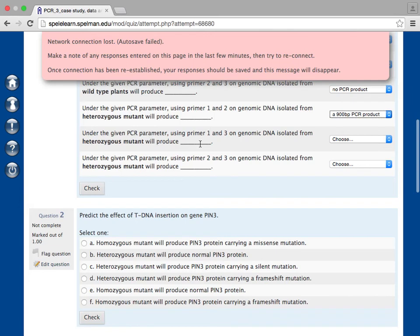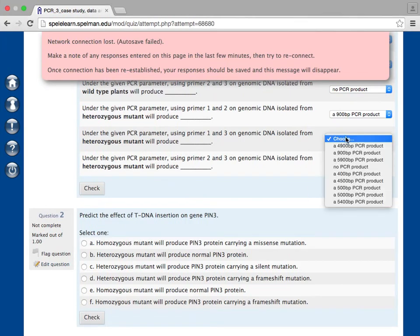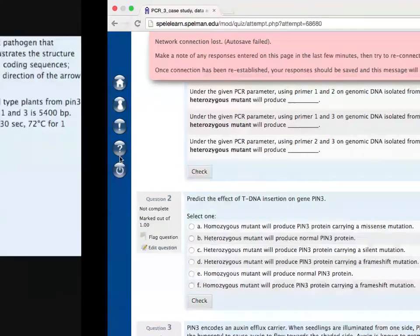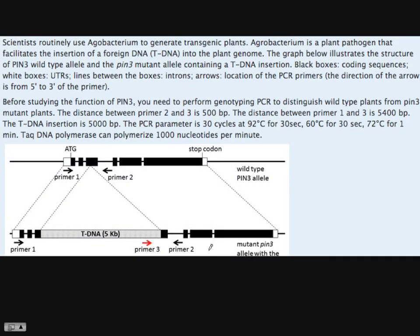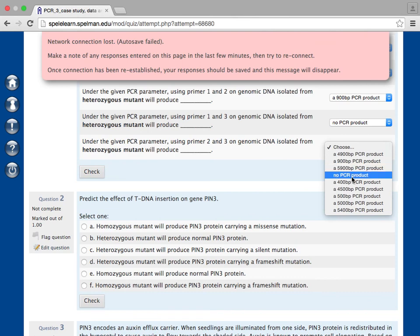Using primer 1 and 3 on genomic isolate. It should be 1 and 3, again, it's no product. 1 and 3 is always no PCR product. Using 2 and 3 on heterozygous mutant. 2 and 3 on heterozygous mutant, again, only the mutant allele can give you a product. It's still 1 band. 2 and 3, only this part will be amplified. And 2 and 3 is 0.5. This one is still 0.5. So this should be 0.5.